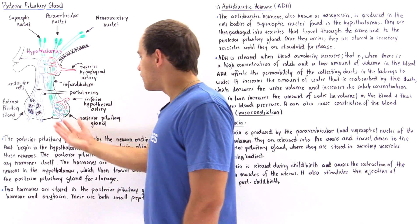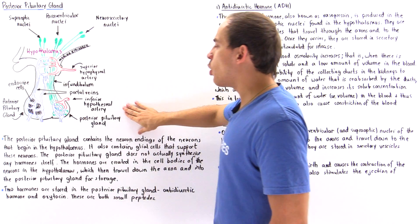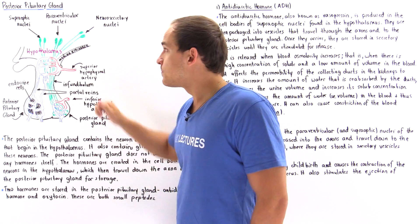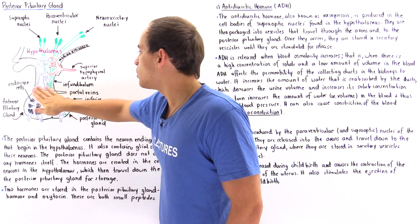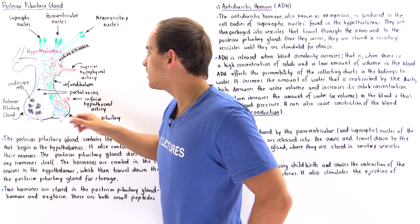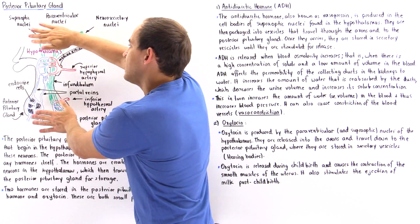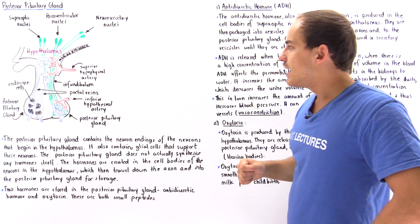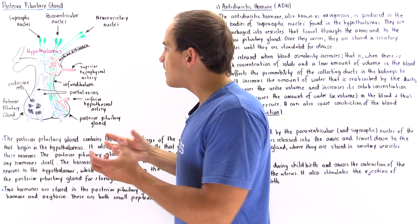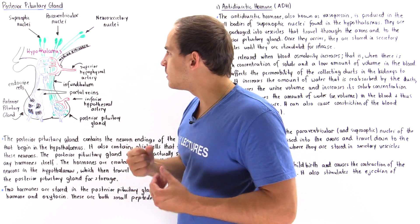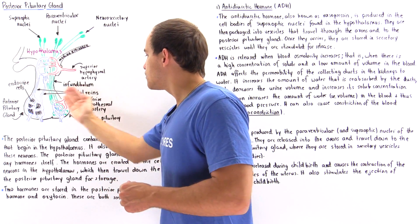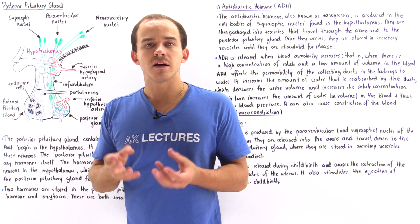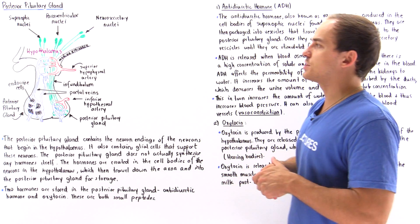Now let's discuss the functionality and purpose of the posterior pituitary gland — the back section of the gland. We have the hypothalamus, and the posterior and anterior pituitary gland. The funnel-shaped section that connects these two regions is known as the infundibulum. Instead of a capillary bed system connecting the hypothalamus to the posterior pituitary, we have a set of neurons.